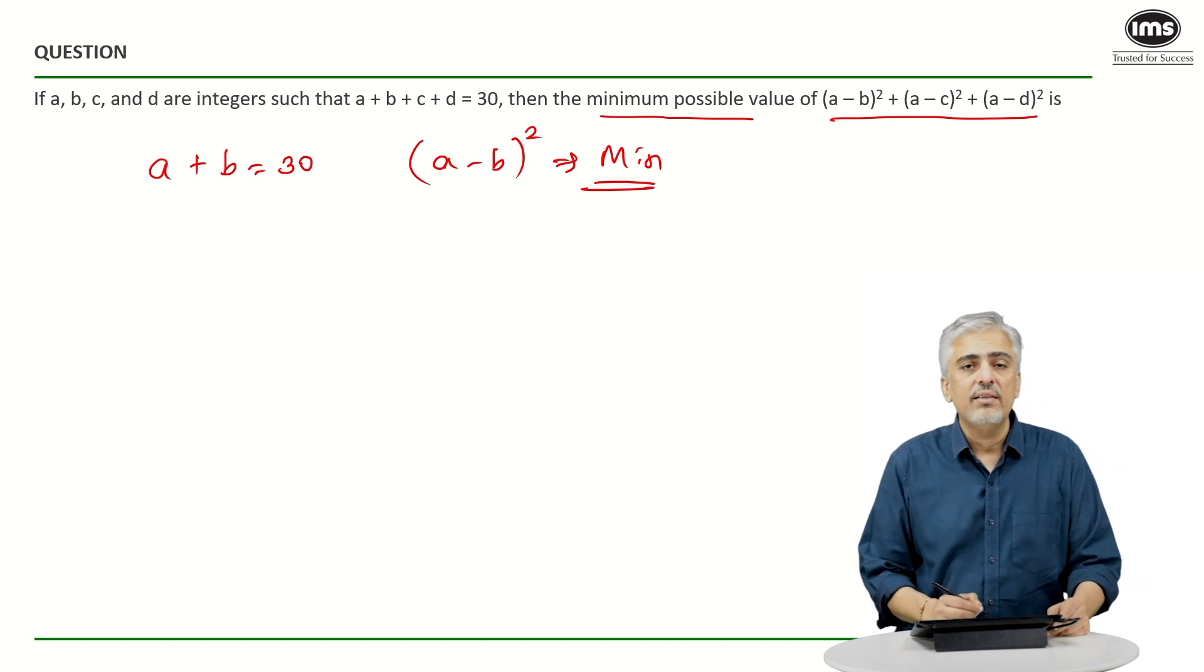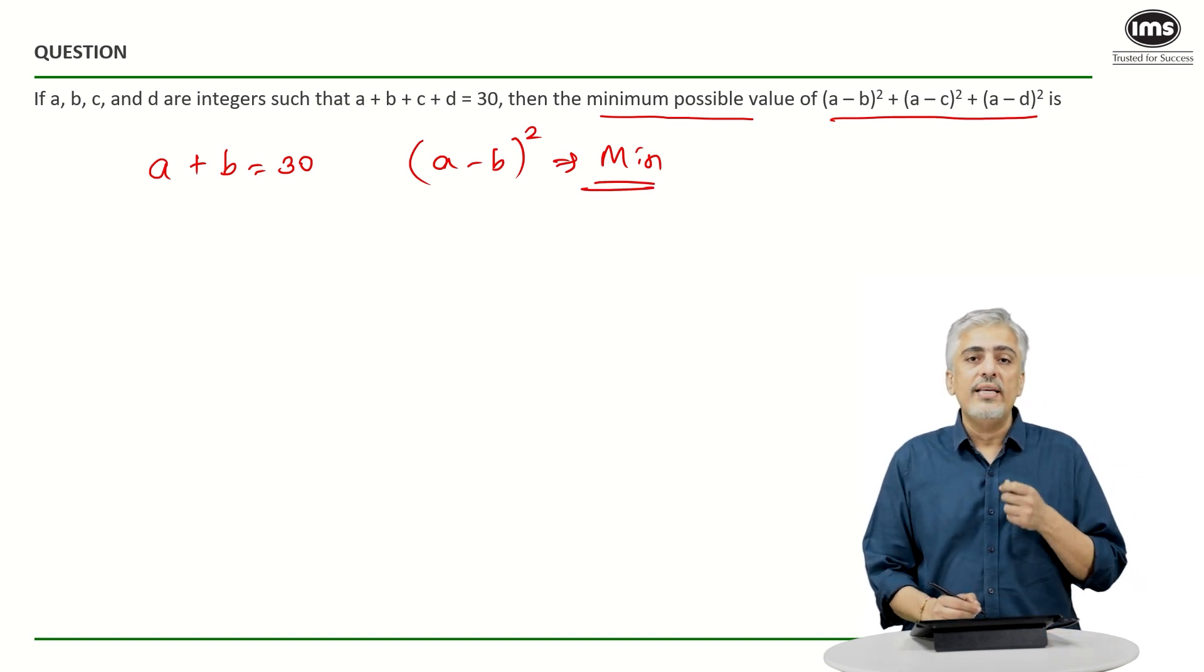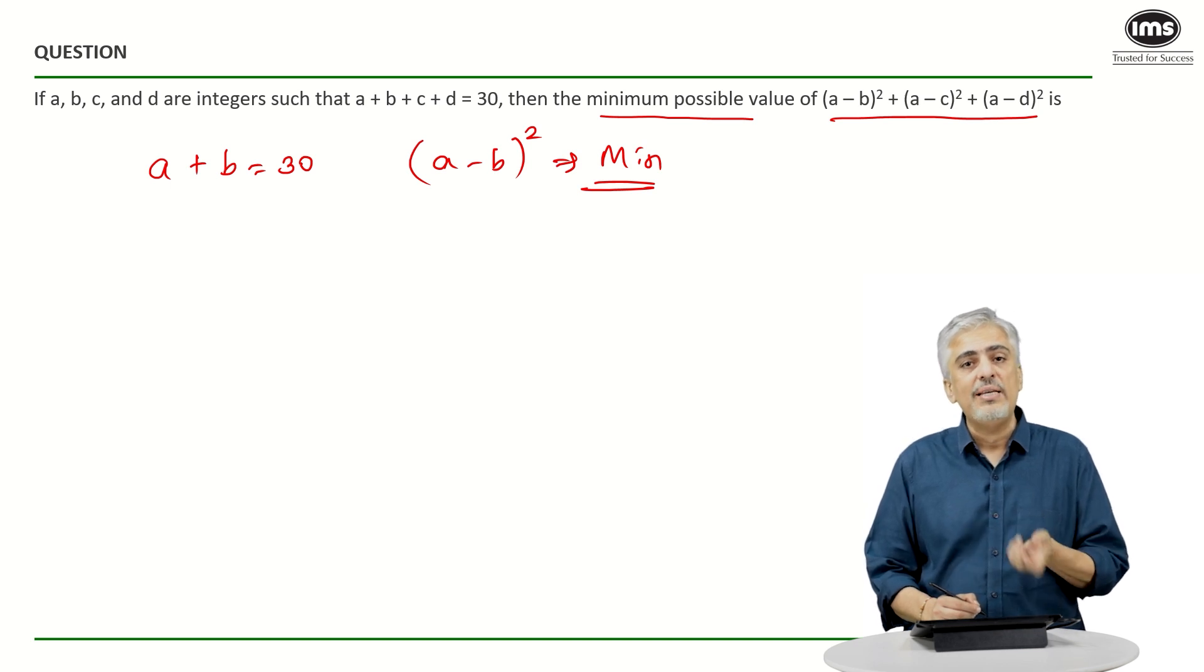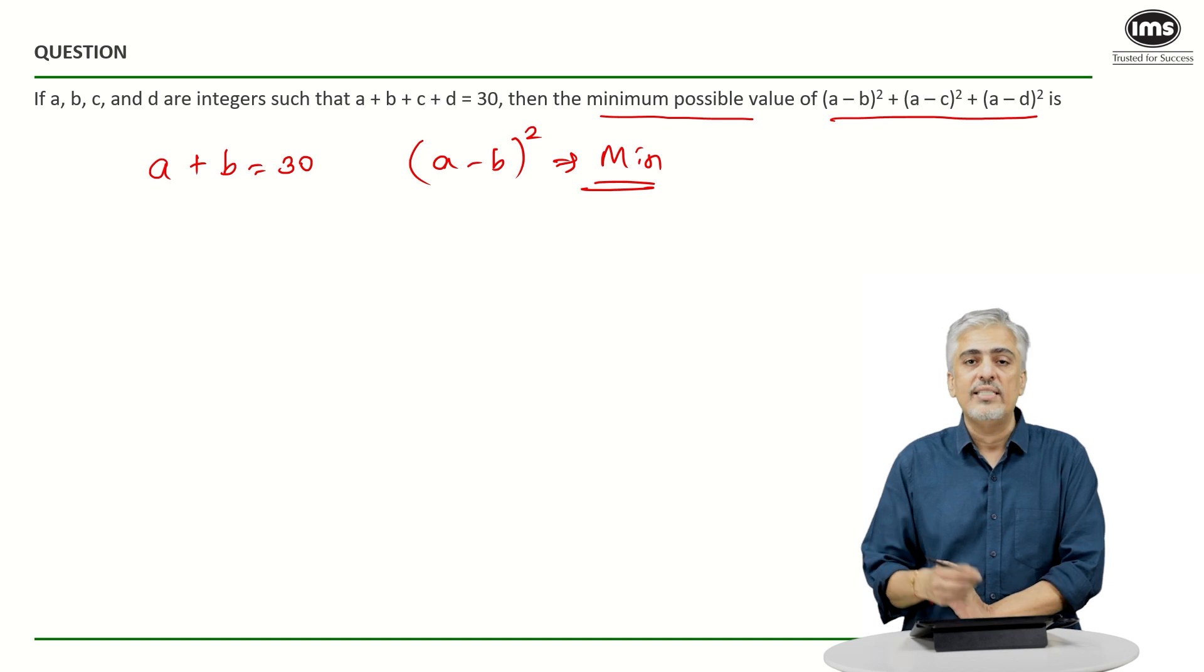Now, think they have told us A and B both are integers. So, in that case, the minimum value for A minus B will be possible when A will be equal to B. Because if A is equal to B, A minus B will become 0 and 0 square will be 0.